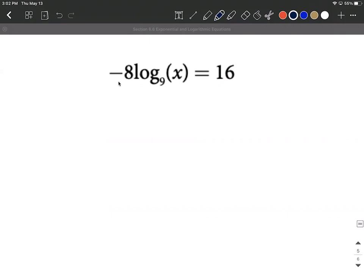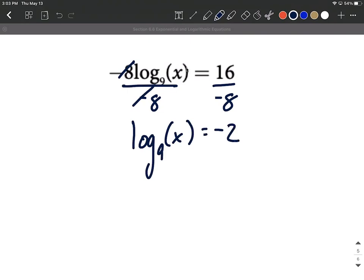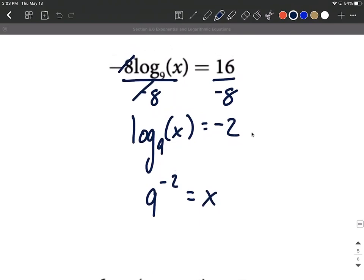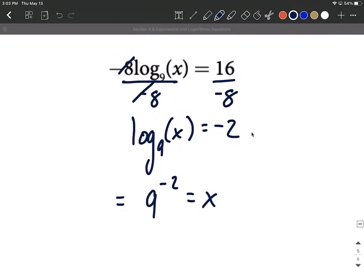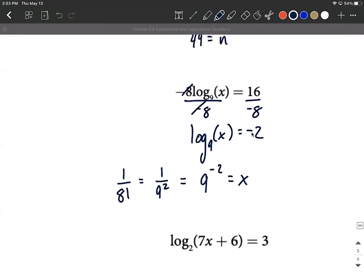What if we have a negative hanging out here, negative 8 log base 9 of x equals 16? Pretty similar, you want to get the log on one side by itself, so let's get rid of this negative 8. It's attached with multiplication, so let's divide both sides by negative 8. That'll put log base 9 of x equals negative 2. Over to exponential form we can say 9 to the negative second power equals x, and we can get maybe a little bit better answer here instead of rewriting this with a negative exponent. Let's go 1 over 9 to the positive second power, or that's 1 eighty-first. Nice exact answer.